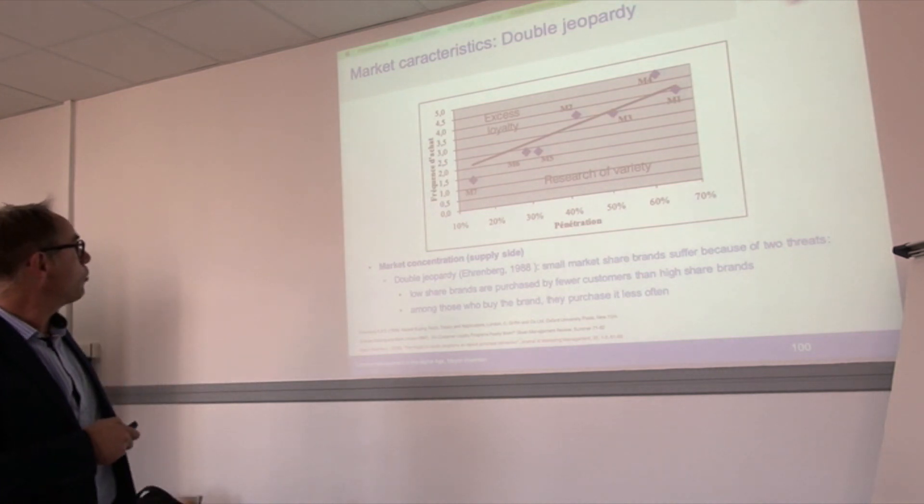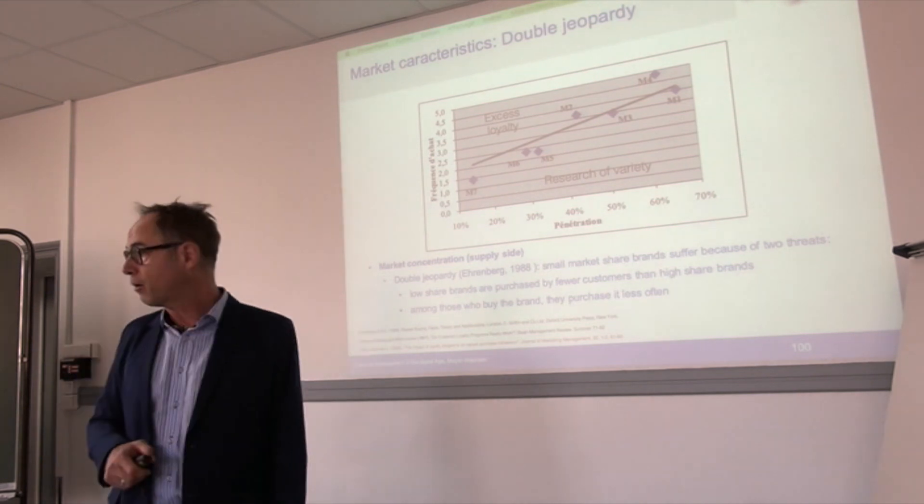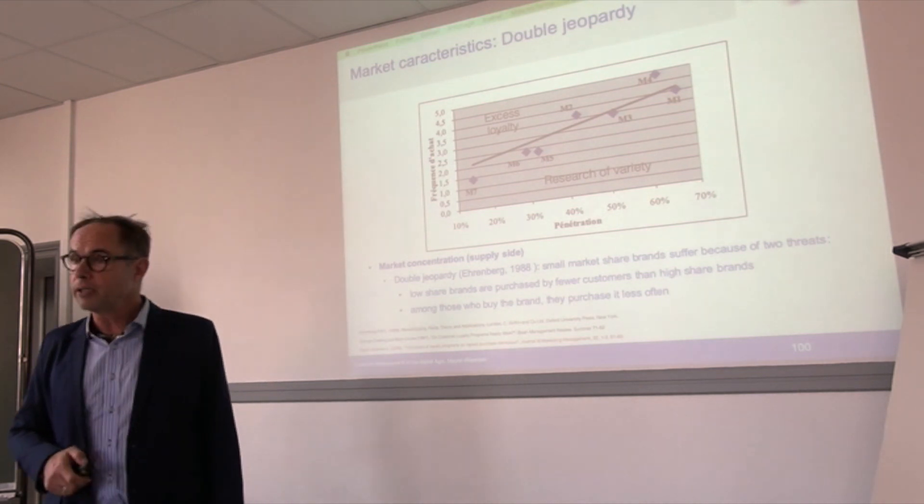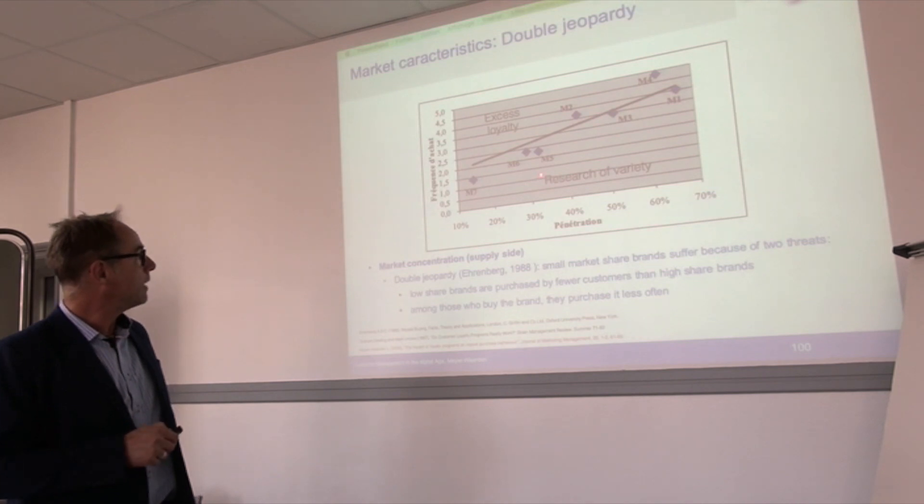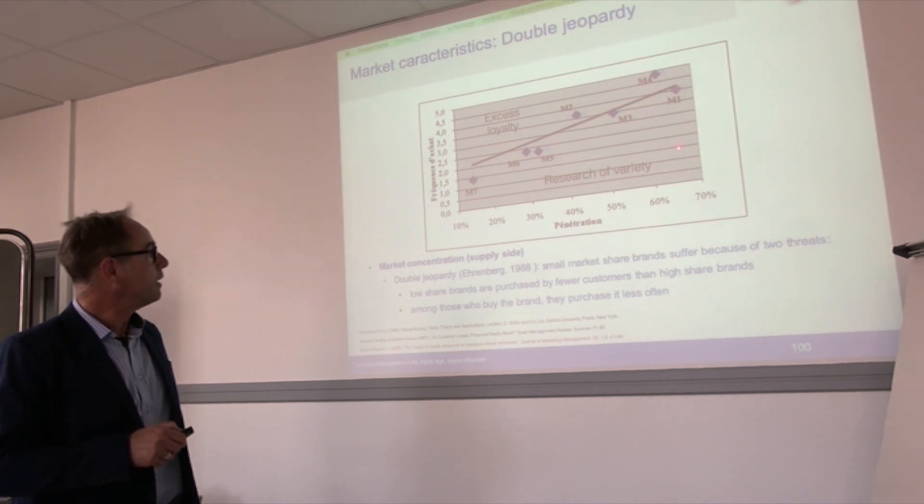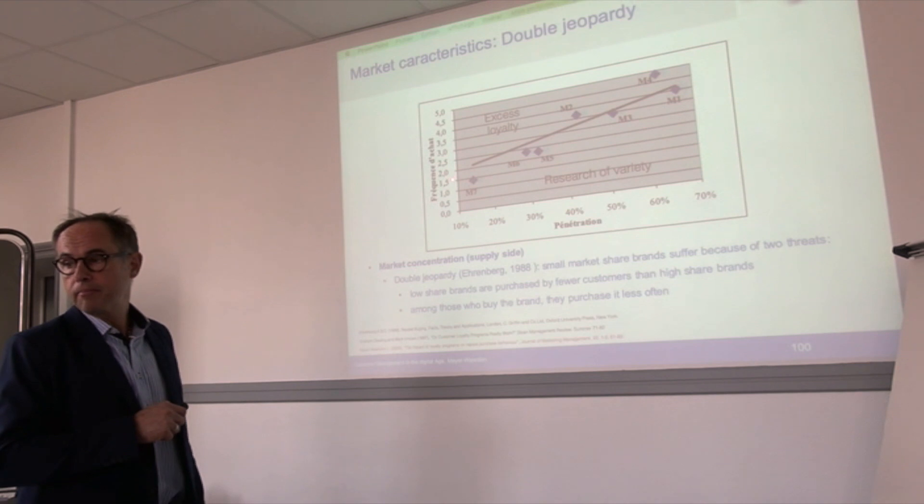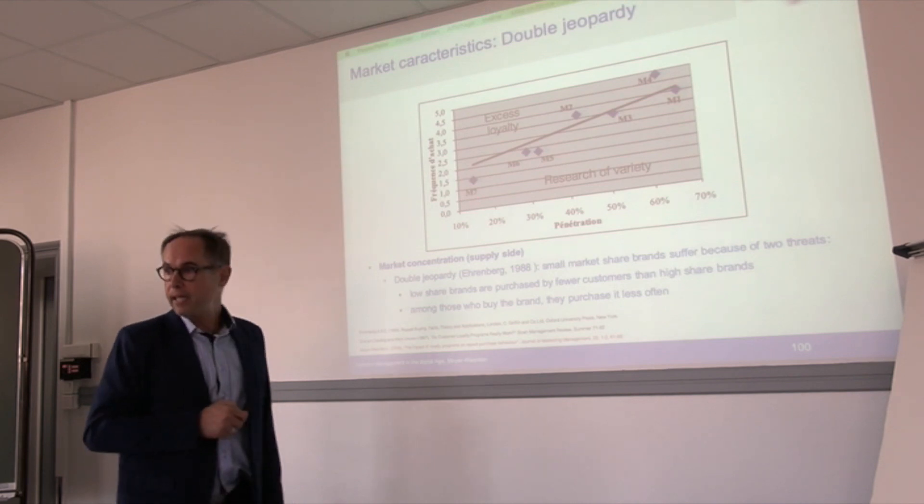This is what you can see in this framework. You can see different brands, the seven stores we've seen already in the study about loyalty programs, and the penetration which means the number of buyers. Bigger stores like Carrefour and Casino are leader brands - they have more buyers and these buyers buy more often. Small brands like Super U have less buyers and these buyers buy less often.